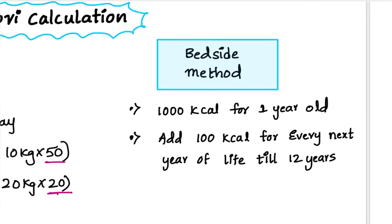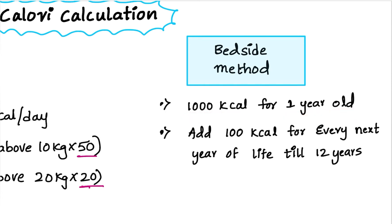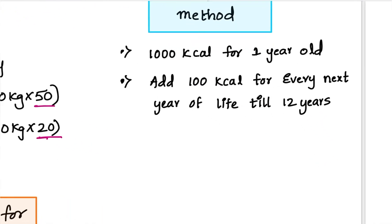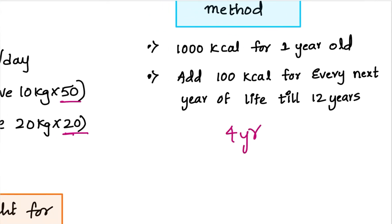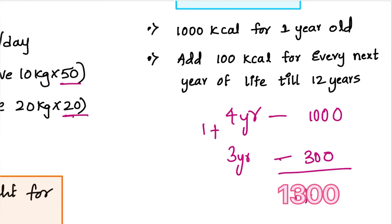The second method is the bedside method for expected calorie calculation, which is relatively easier. The calorie requirement for a 1-year-old child is approximately 1000 kcal. For each year after 1 year, the child requires an additional 100 kcal up to 12 years of age. For example, for a 4-year-old child: 1000 kcal for the first year plus 300 kcal for the next 3 years, giving a total of 1300 kcal per day.